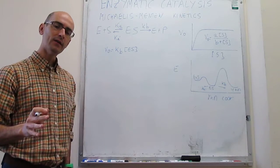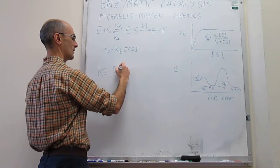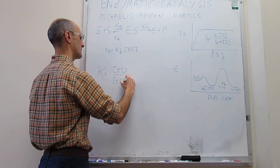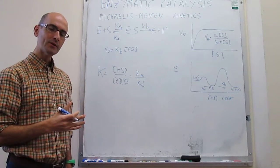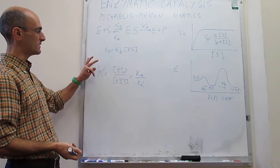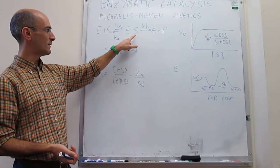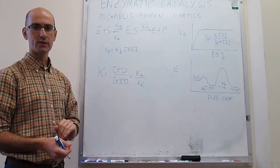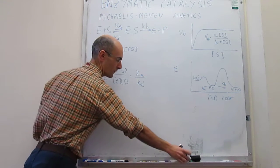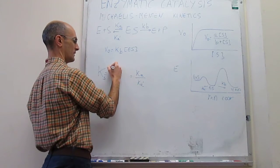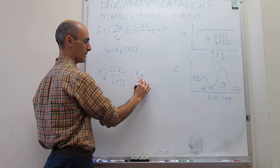The way we handle this is by writing the equilibrium constant of that equilibrium process, which is the concentration of ES over the concentration of E times the concentration of S, and this equals the ratio of the forward over the reverse rate constant. It turns out it is a little more convenient to invert this, so instead of the equilibrium constant for the formation of ES, we look at this from the perspective of the dissociation of the ES intermediate.